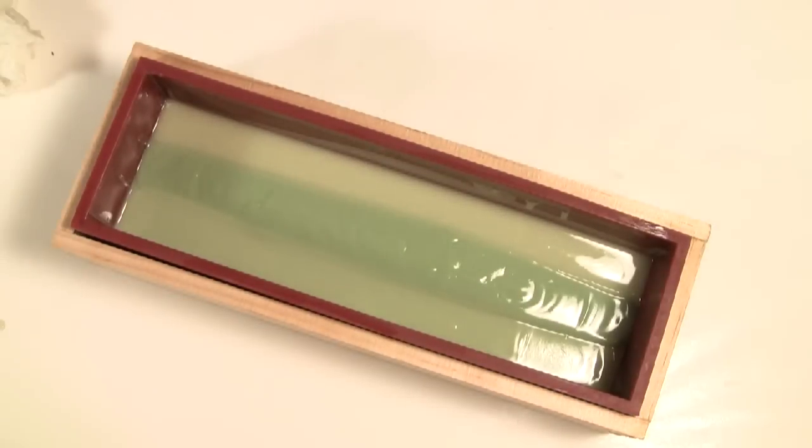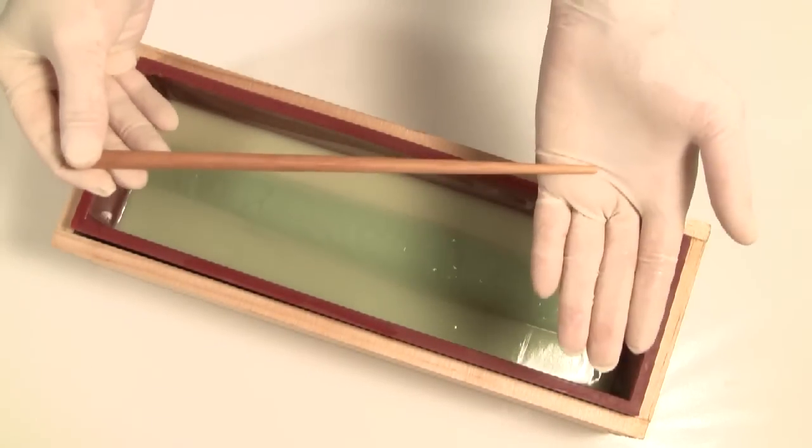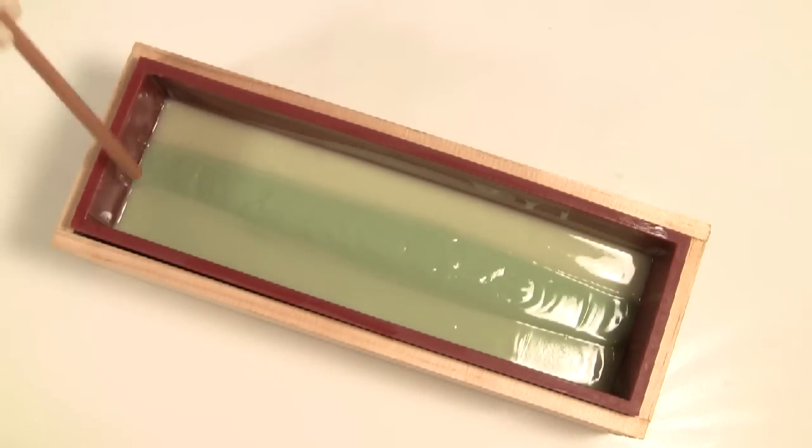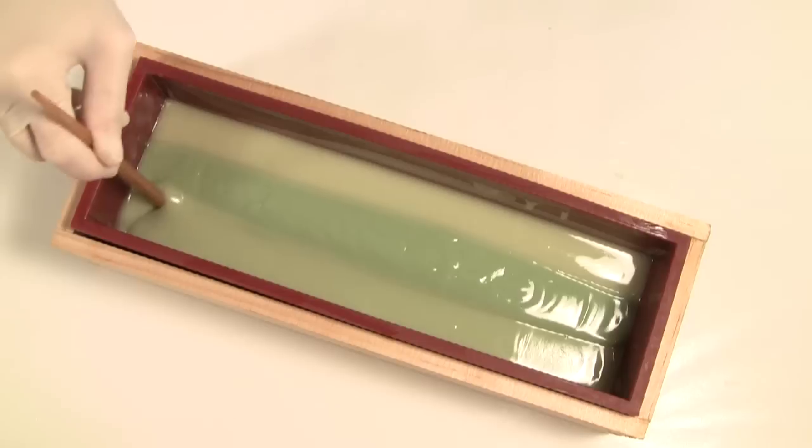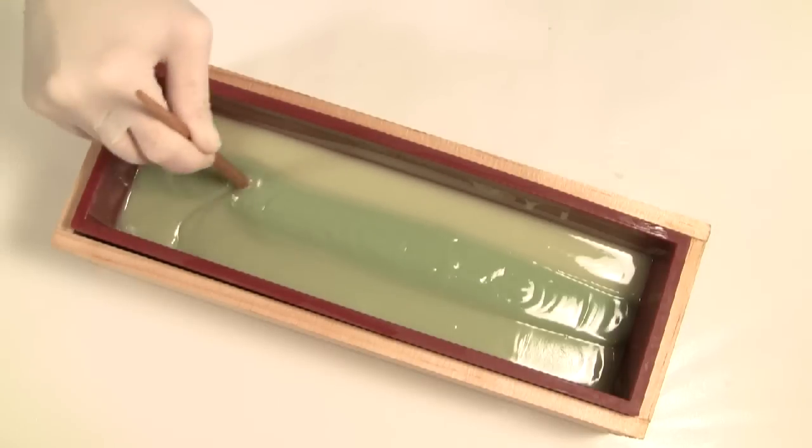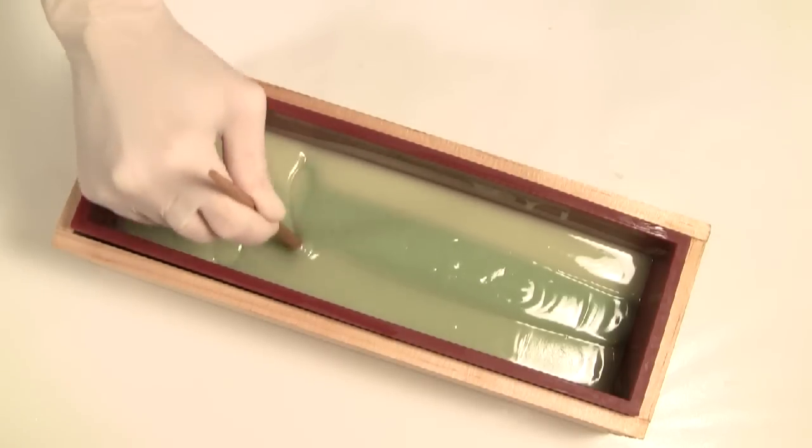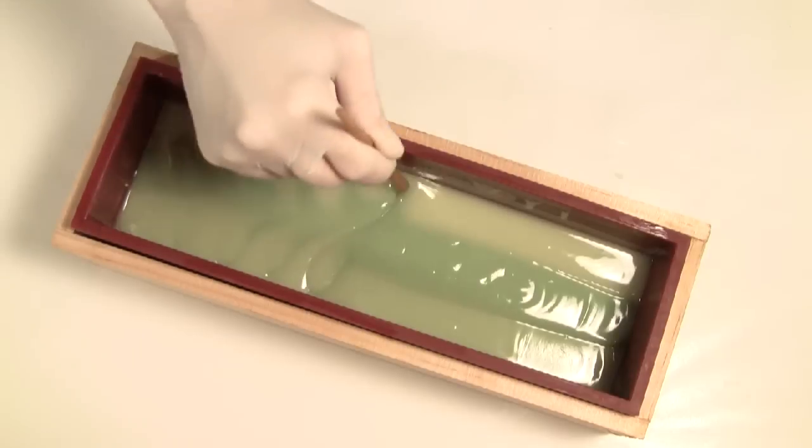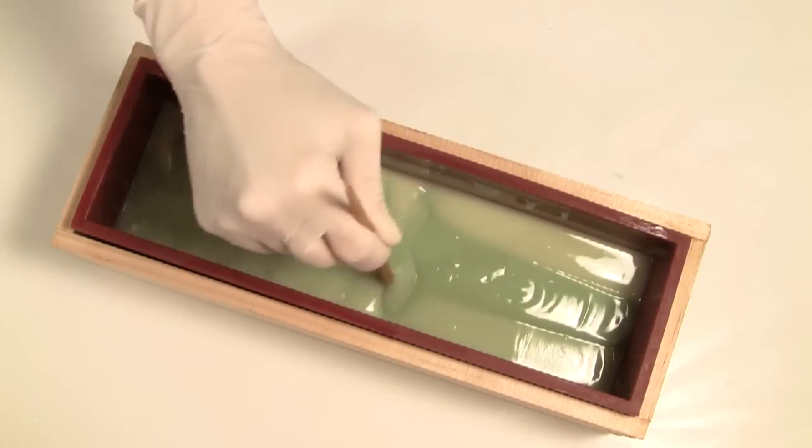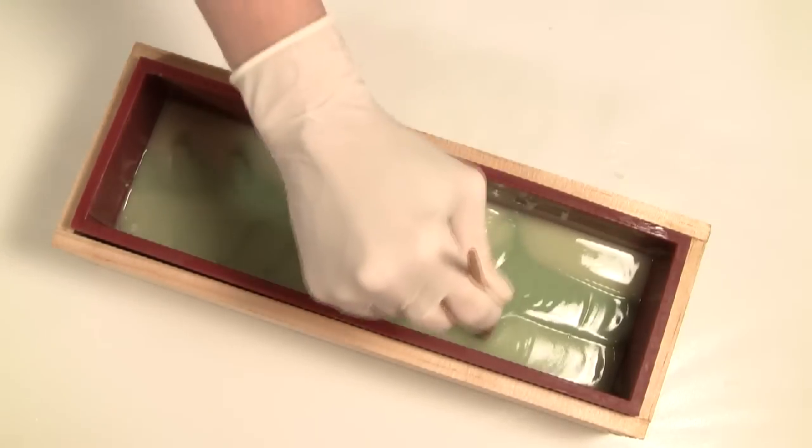I'm ready to swirl. Using the thicker end of my chopstick, I place it in the bottom of the mold. Then create a figure eight pattern horizontally through the soap. You can make your eights as tight or as loose as you would like.